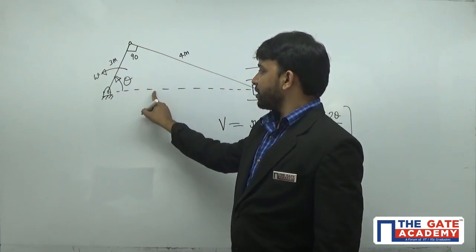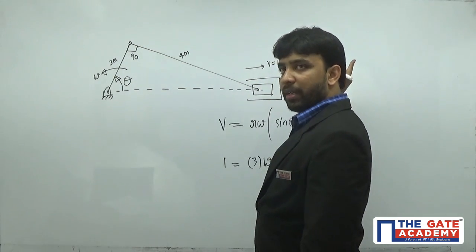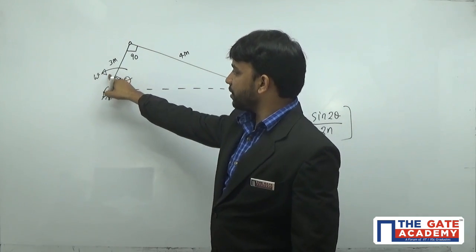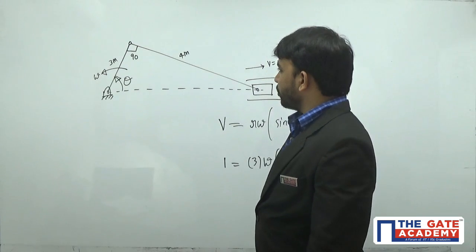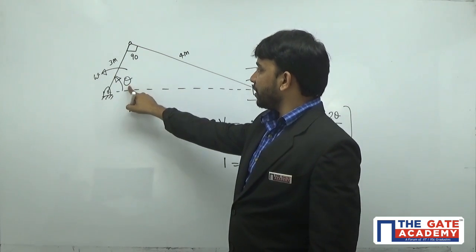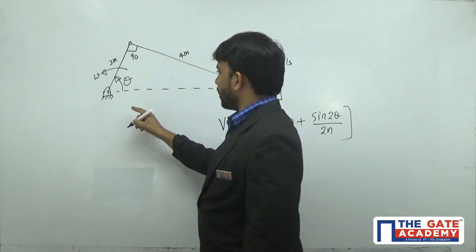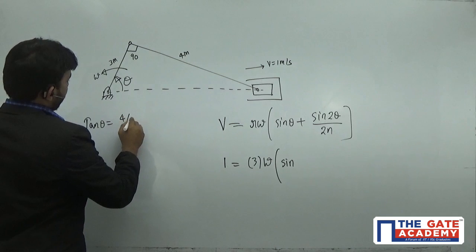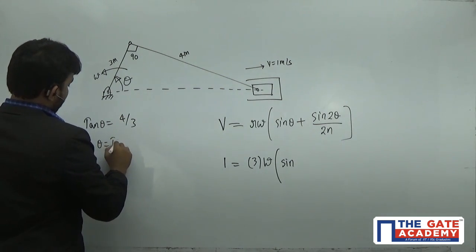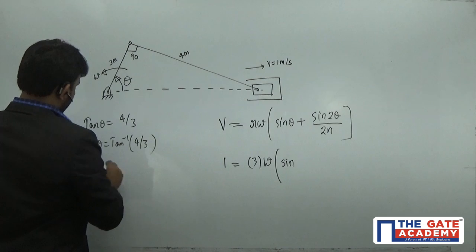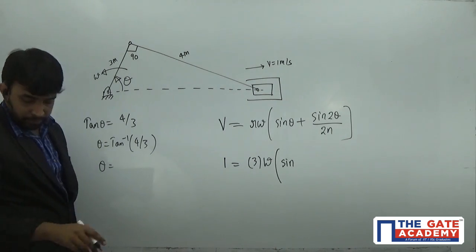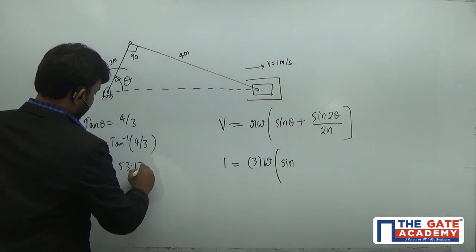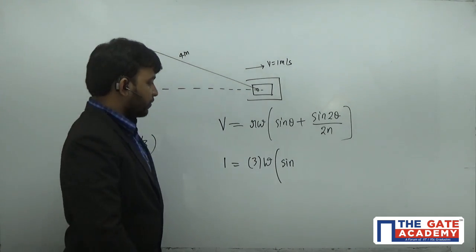At time equals zero, the crank is at the top dead center or inner dead center, so θ begins from there. Since the angle between the crank and connecting rod is 90 degrees, and this forms a right-angle triangle, we can write tan θ = 4/3, so θ = tan⁻¹(4/3) = 53.13 degrees. So the crank angle is 53.13 degrees.